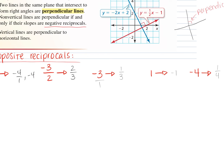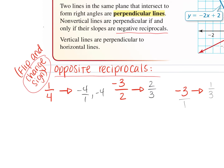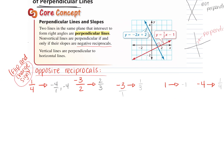Any questions on opposite reciprocals? When changing the sign of a fraction, you change the sign of the whole thing — not just the numerator or denominator separately. If two slopes create perpendicular lines, they are opposite reciprocals of each other. If lines are parallel, their slopes are the same. If they're perpendicular, the slopes are opposite reciprocals.